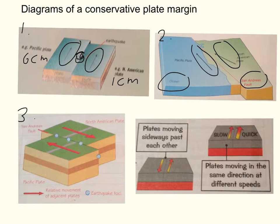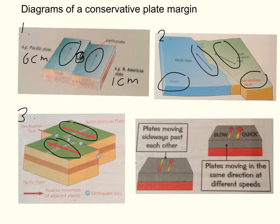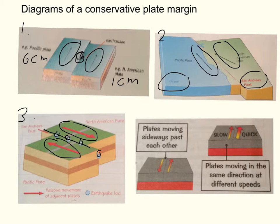Diagram three is a block diagram from the foundation book. We again have the North American plate and the Pacific plate, with arrows showing the movement. Along the fault, where the two plates are moving past each other, we have little dots labelled as earthquake foci. An earthquake focus is the point where the energy is released when it has built up — that's your point of origin of your earthquake. So labelling the earthquake foci is a good point to include, and it can also be shown as a little cross along the middle.